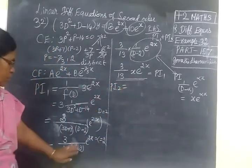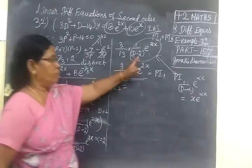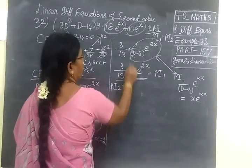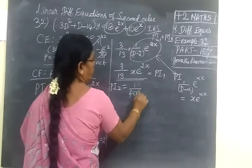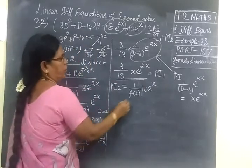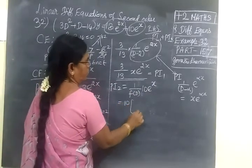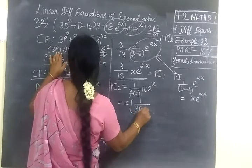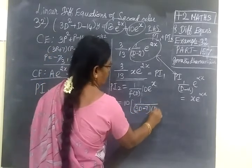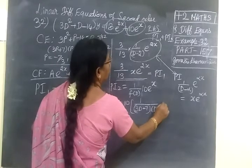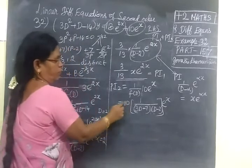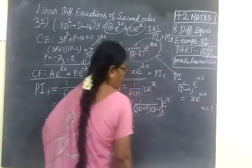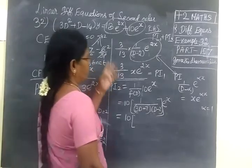Then next is PI2. PI2 equal to 1/f(d) times 10e^s. So take 10 outside: 10 times 1 over the factors 3d plus 7, d minus 2, times e^s. Now you substitute alpha equal to 1.